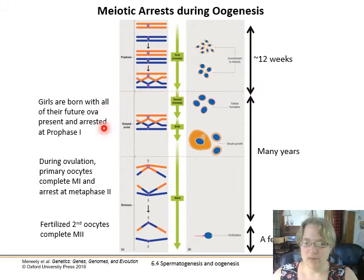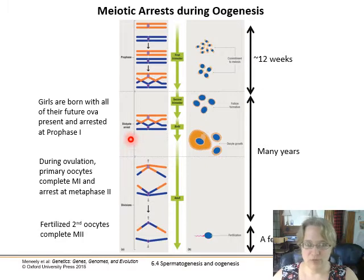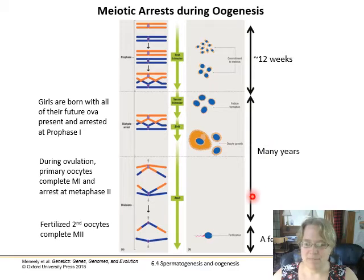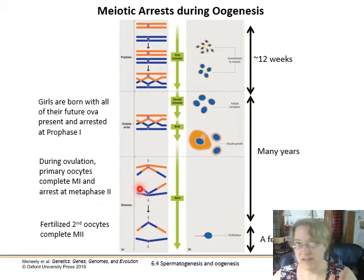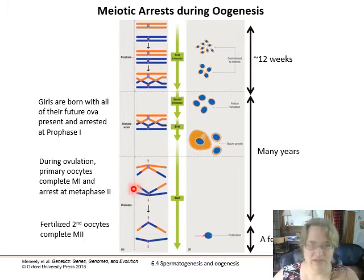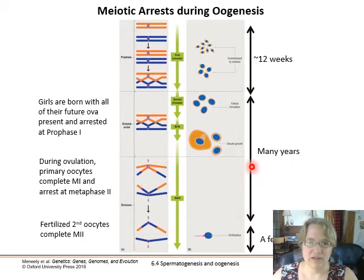In the second trimester, during follicle formation, meiosis arrests at prophase I. So it's sort of committed to meiosis but doesn't continue until puberty, when you start releasing eggs every 20 days or so. The menstrual cycle is the maturation and release of the mature eggs.